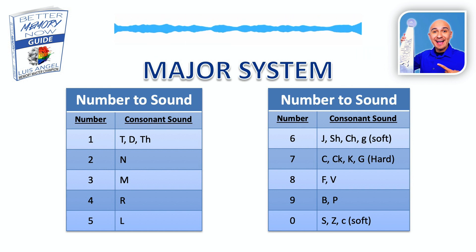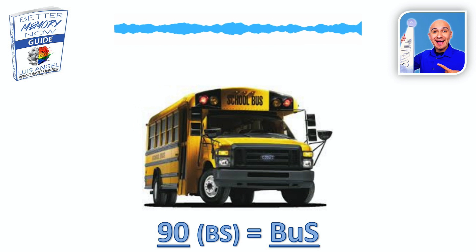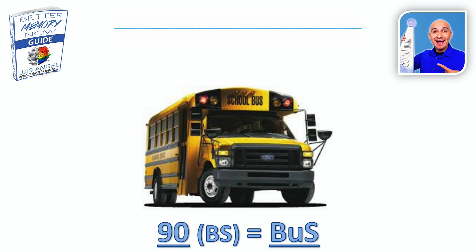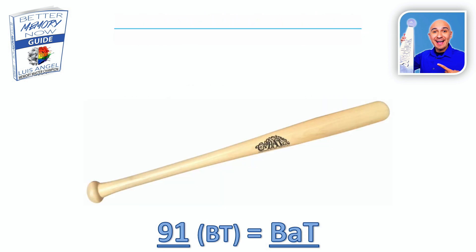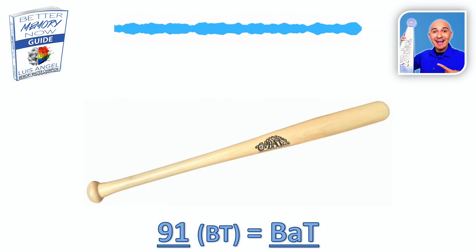Let's go right into 90. Nine-zero: we have the B sound, and for the zero we have the S sound. Throw in a vowel and we come up with bus. I like to picture a school bus for number 90. 90 is bus. For 91, I like to picture a bat. For the nine it's a B sound, for the one it's a T sound. You can picture a baseball bat, the animal bat, or even Batman. I like to picture the baseball bat for 91. 91 is bat.